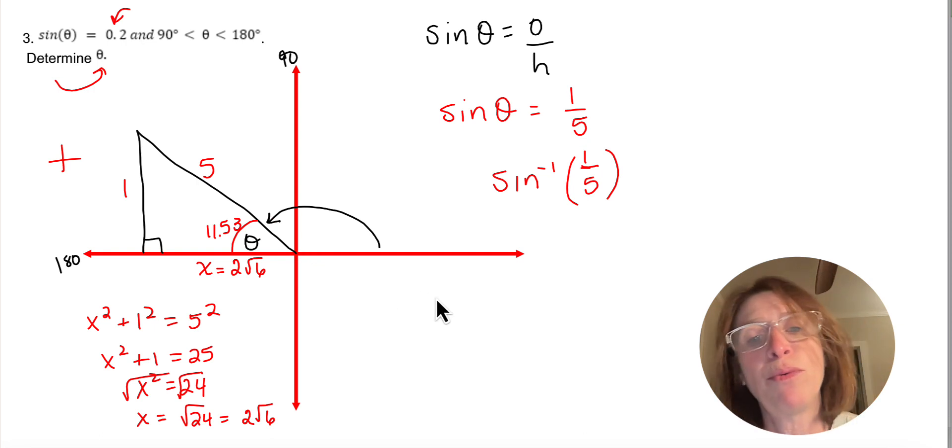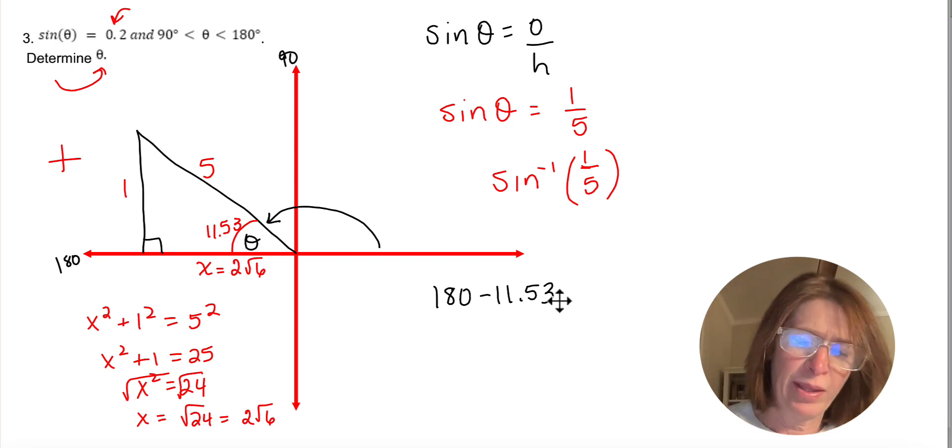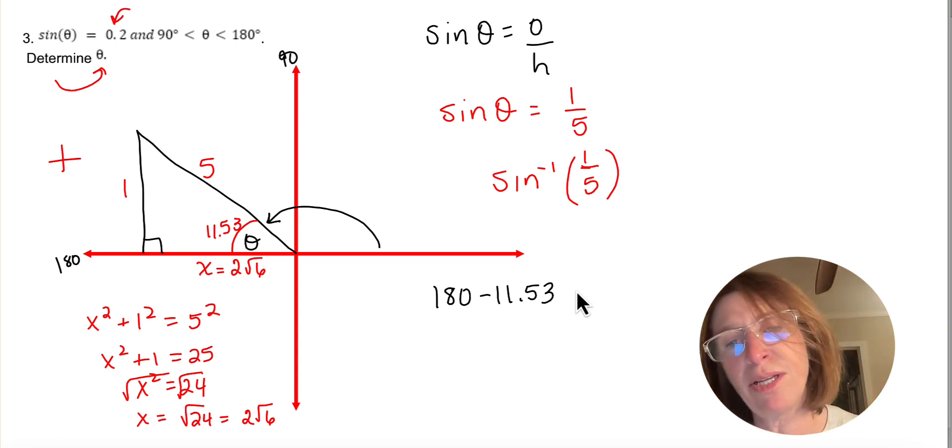So we would do 180 minus 11.53. And 180 minus 11.53, that gives me 168 degrees.